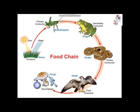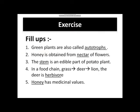Now let's do one exercise based on this chapter: Green plants are also called autotrophs. Honey is obtained from the nectar of flowers. The stem is an edible part of the potato plant. In a food chain, deer is a herbivore. Honey has medicinal values.